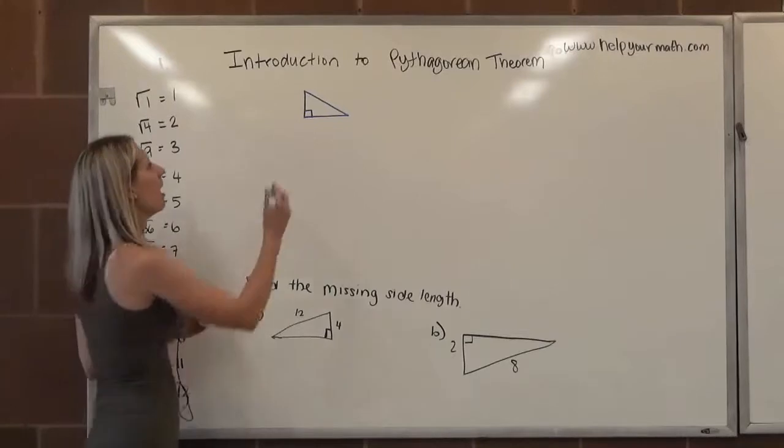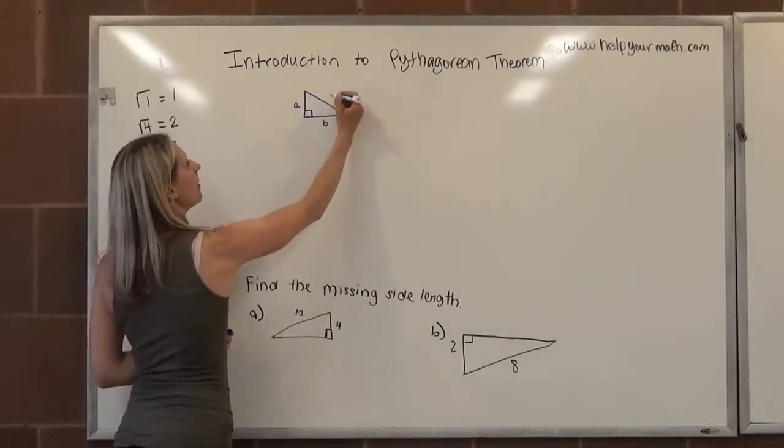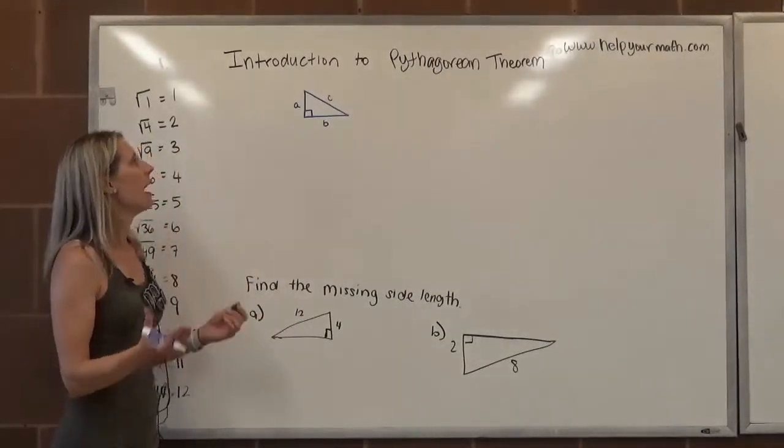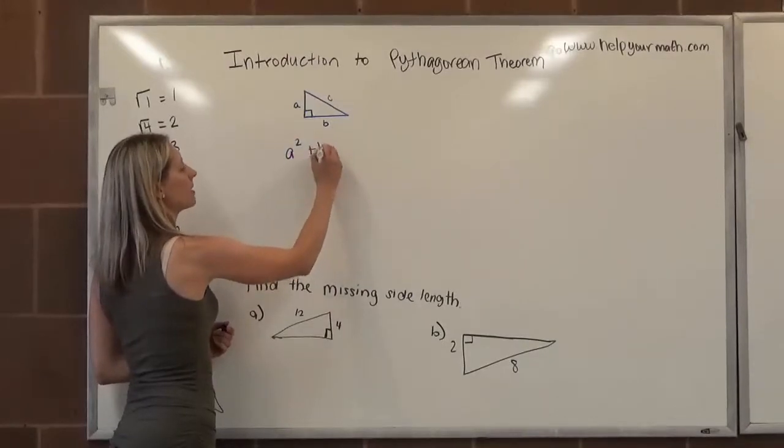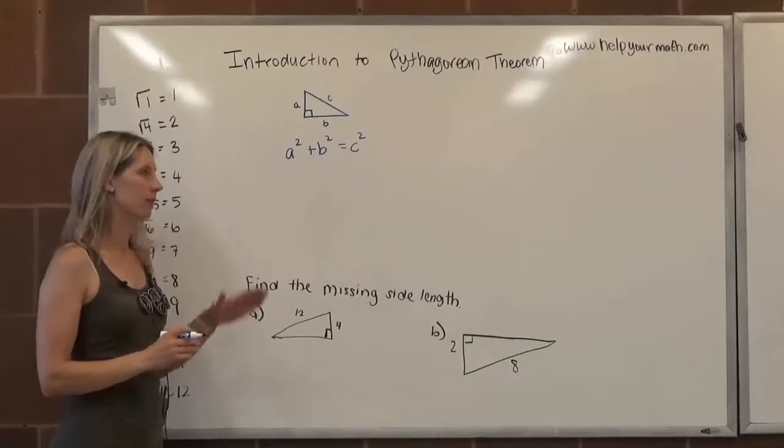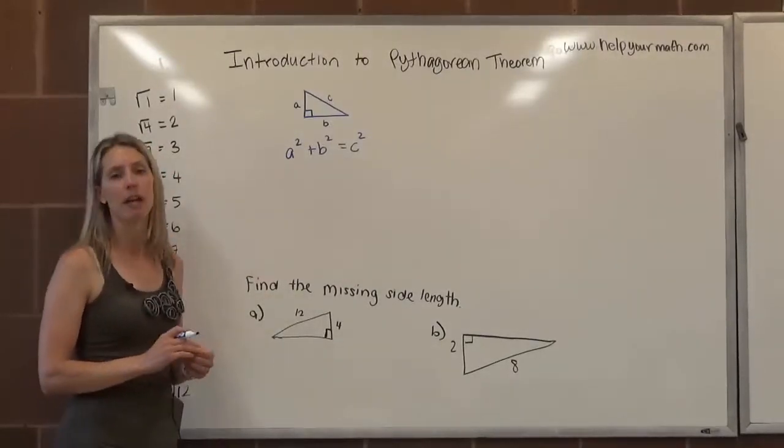But for Pythagoras, we say that one of the legs is a, one of the legs is b, and the hypotenuse is c. So we change our variables ever so slightly. And then what it says is that if we square a and add it to the square of b, the result is the square of c. So that's the Pythagorean theorem referring to the legs and hypotenuse of a right triangle.